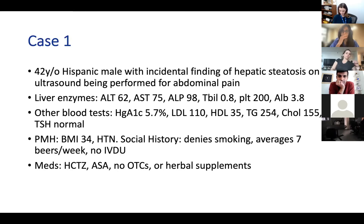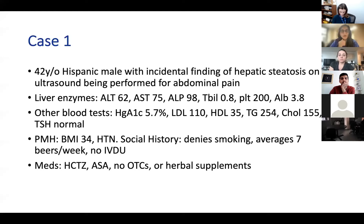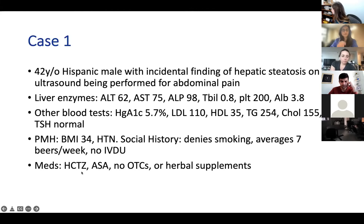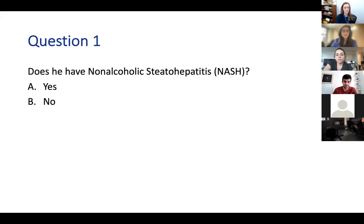Starting with a case: a 42-year-old Hispanic male with incidental finding of hepatic steatosis on ultrasound performed for abdominal pain. Liver enzymes show ALT of 62, AST of 75, ALT of 98, bilirubin of 8, platelets 200,000, and albumin of 3.8. Hemoglobin A1c is 5.7% consistent with prediabetes, elevated LDL, high triglycerides—consistent with metabolic syndrome—and low HDL. Past medical history includes class 1 obesity, hypertension, averages 7 beers a week, no IV drug use; medications are hydrochlorothiazide, aspirin, no over-the-counter medicines or herbal supplements.